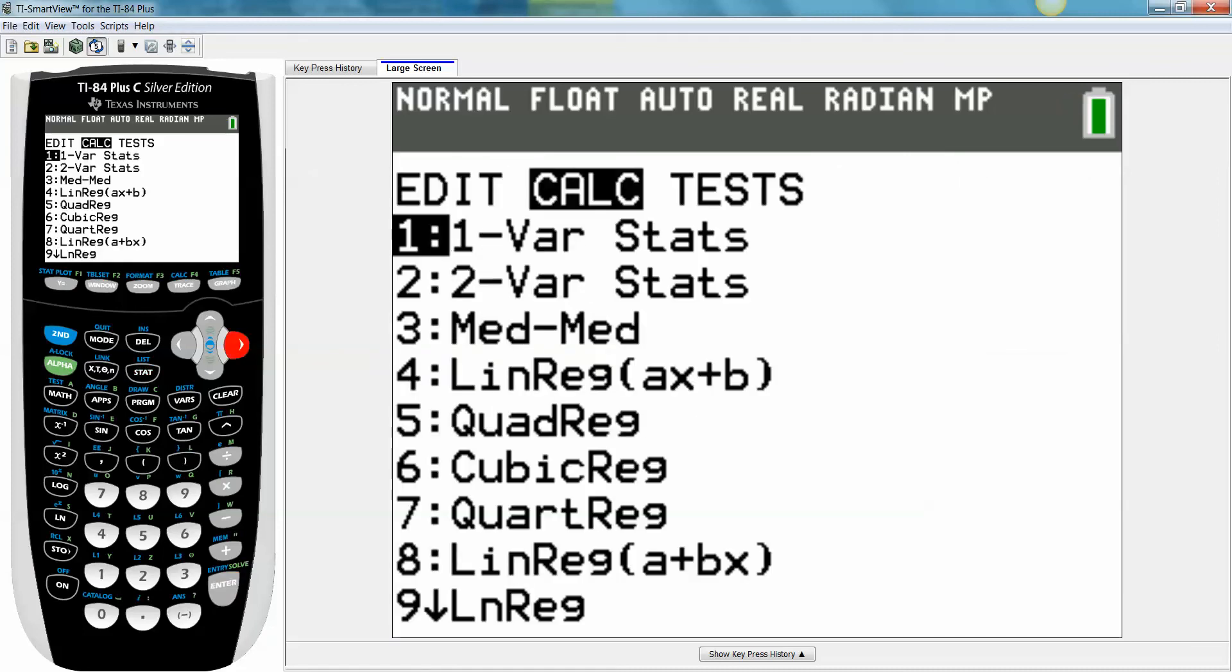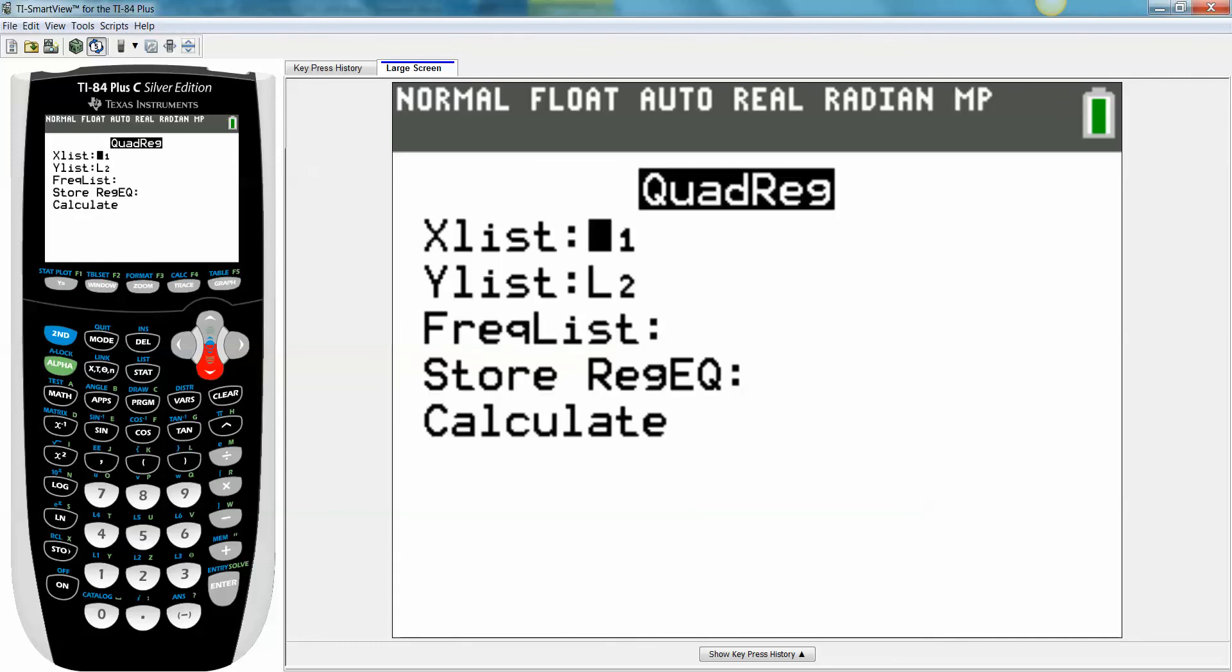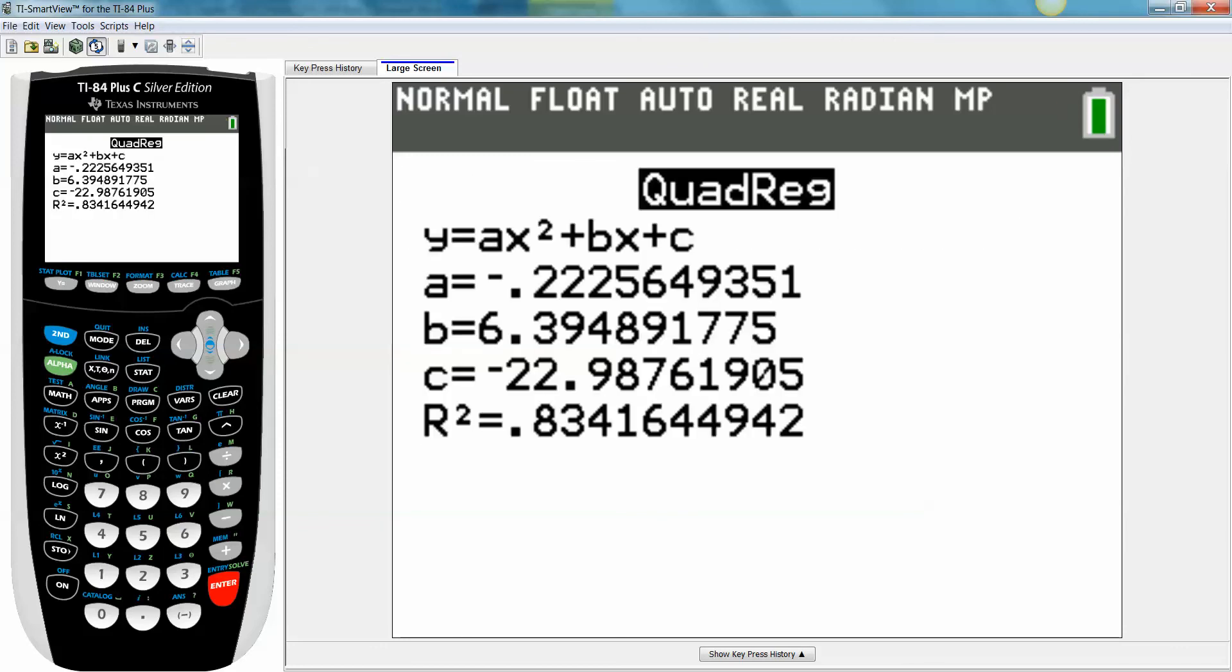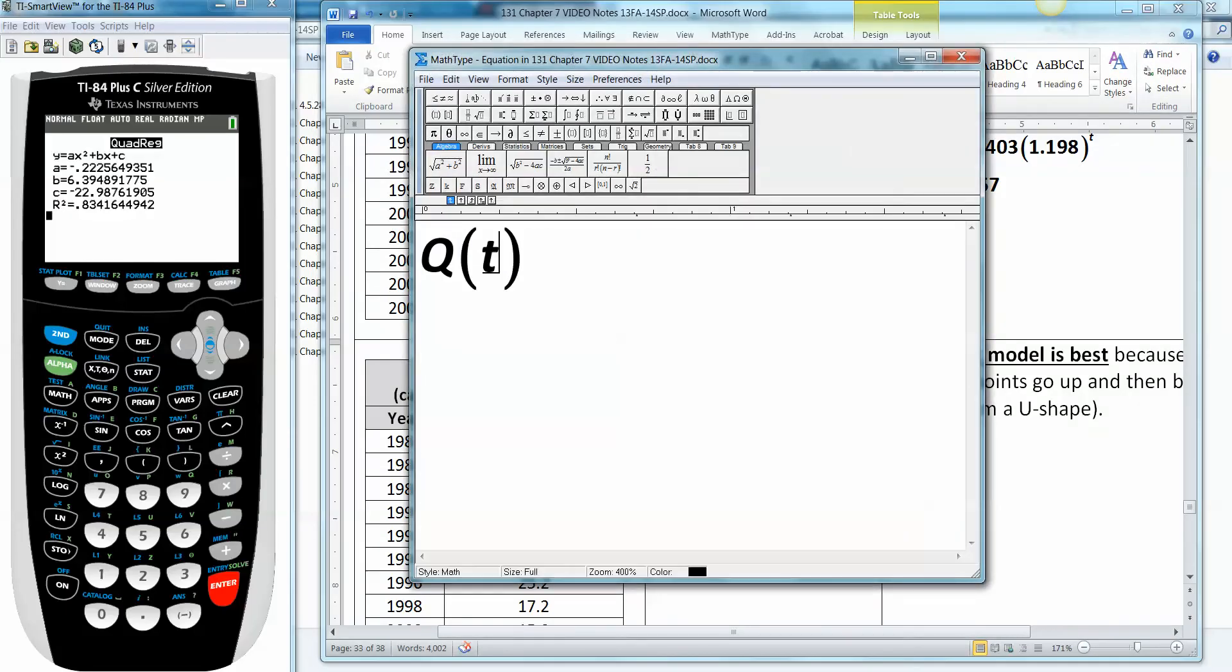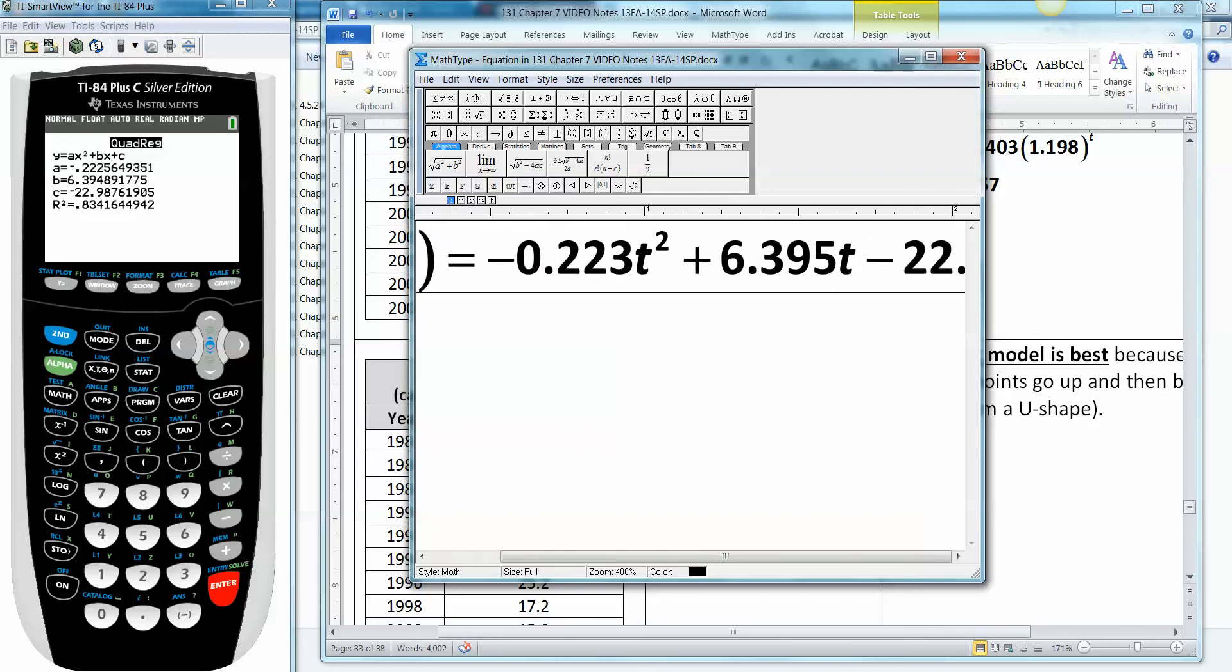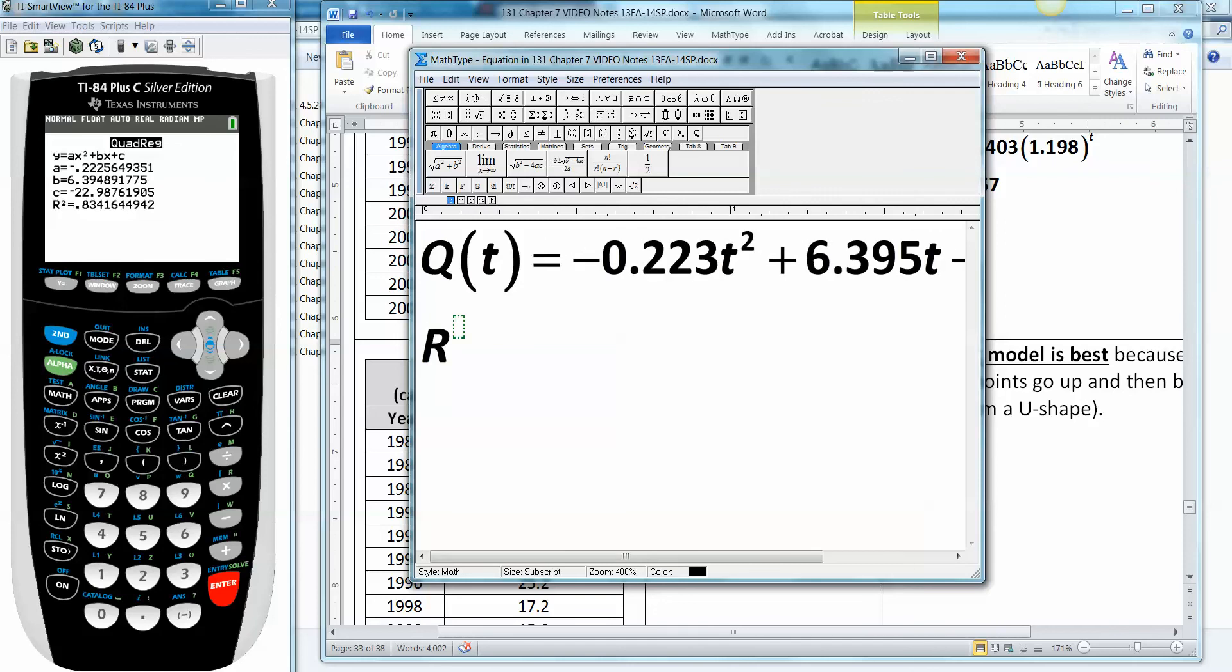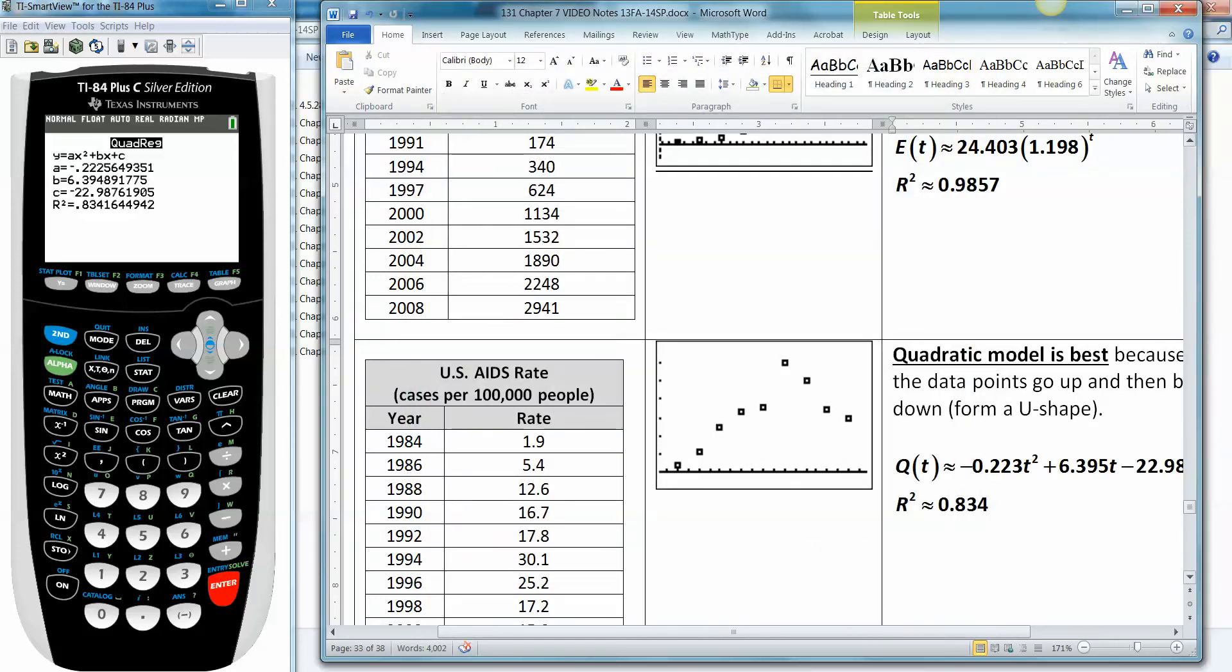1980 is our starter. Everything looks good. And then go to stat, calculate, number five. You want quadratic regression, number five. And then this is all good, calculate. And there it is. You can see the R squared value is 0.834 down there. Let's call it Q of t because it's quadratic, is equal to negative 0.223 t squared, plus 6.395 t minus 22.988. And R squared is 0.834. And there we have all three of the models.